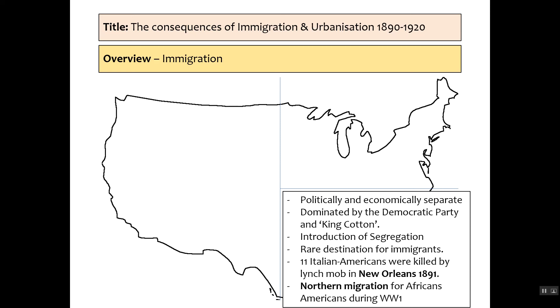We can evaluate that point by saying that in the south there were very few immigrants, whereas in the north urbanisation and immigration tended to affect the population much more.